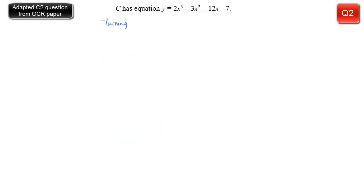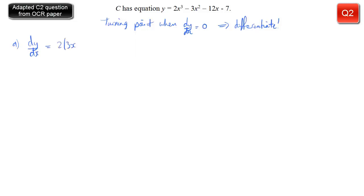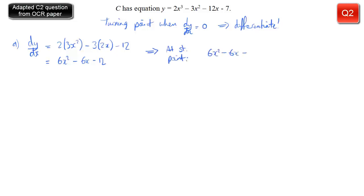We've been given curve C with this equation and we're asked to find the turning points. We know these occur when the first derivative dy/dx equals 0, so let's differentiate. dy/dx is going to be 2 lots of 3x squared — multiply by the power and reduce the power by 1 — take away 3 lots of 2x, take away 12. Tidying up gives 6x squared minus 6x minus 12, and we set that equal to 0 for the stationary point condition.